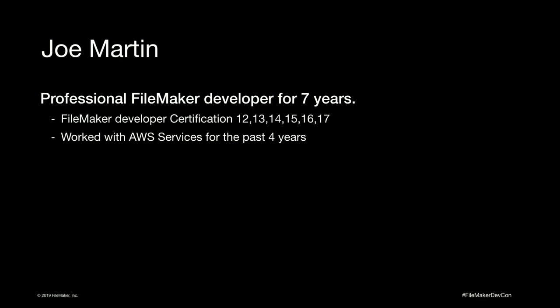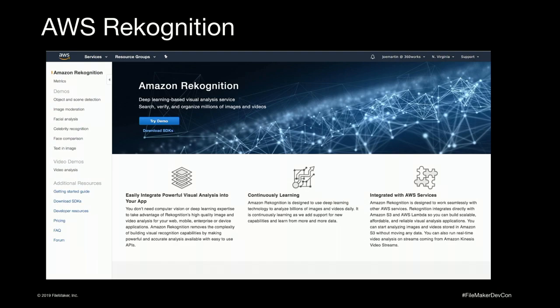Machine learning can have a fairly steep learning curve, and it can take a lot of time to build and train your models before you even see any results. So today, I wanted to show you how you can use AWS Rekognition to utilize machine learning in FileMaker within just a couple scripts. But first, let me talk a little bit about what Amazon Rekognition is. On the back end, Rekognition is a collection of pre-built machine learning models.